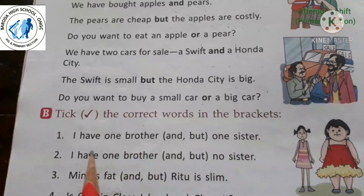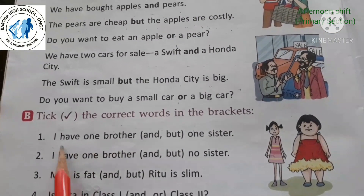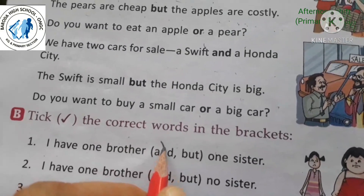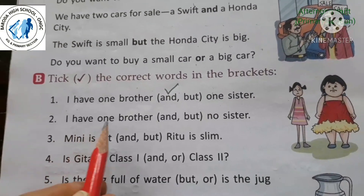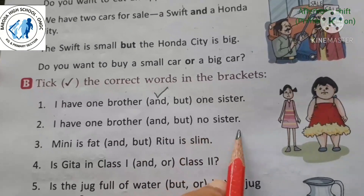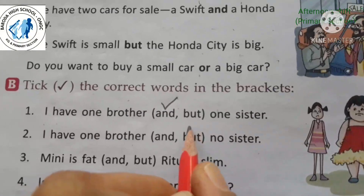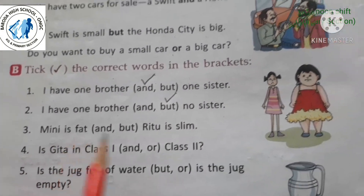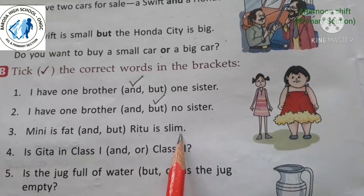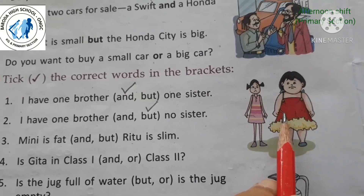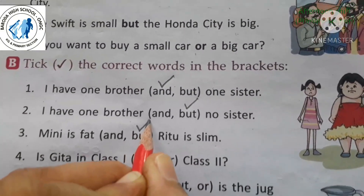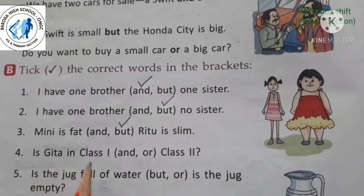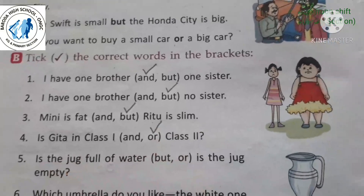Now let's do some exercises. Tick the correct word in the brackets. First: 'I have one brother and one sister' — tick 'and'. Second: 'I have one brother but no sister' — showing difference, so 'but'. Third: 'Minnie is fat but Ritu is slim.' Fourth: 'Is Gita in class first or class two?' — giving choices, so 'or'.